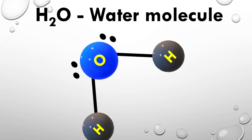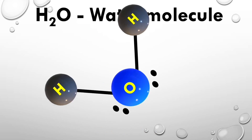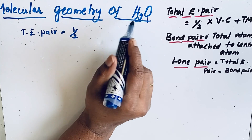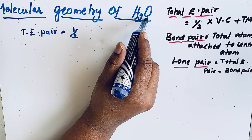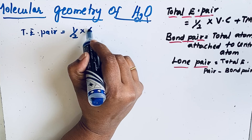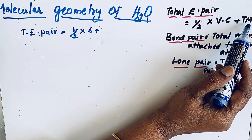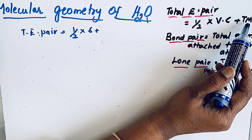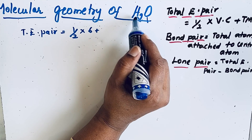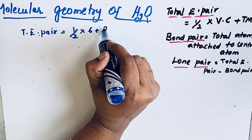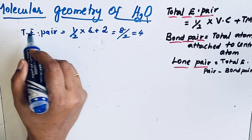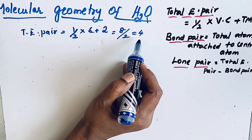Now we can calculate the total electron pair using the formula: half into (VC + TMC). What is the valence electron of oxygen? Oxygen has atomic number 8, so there are 6 valence electrons. TMC is the total monovalent atoms — hydrogen has valency 1, and there are 2 hydrogen atoms attached to oxygen. So: half into (6 + 2) = half of 8 = 4. The total electron pair in H₂O is 4.